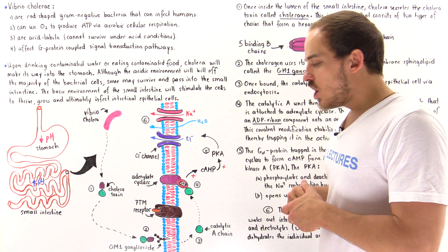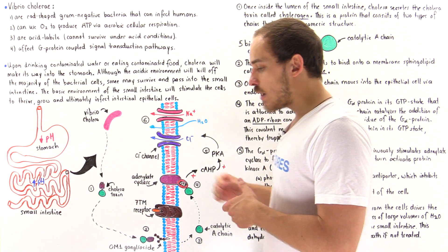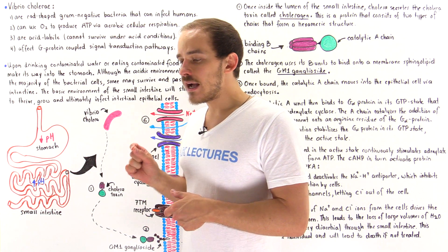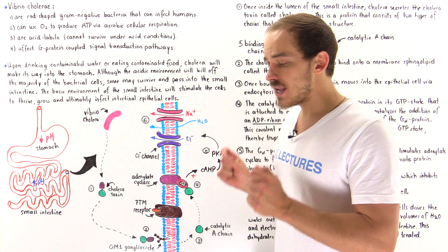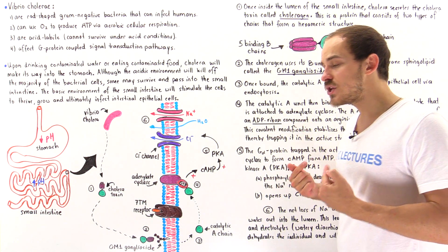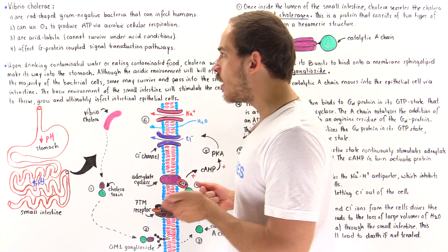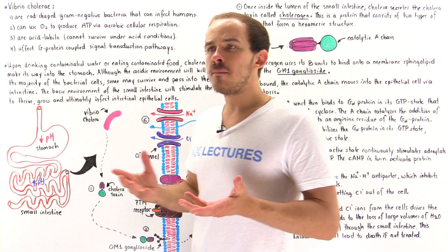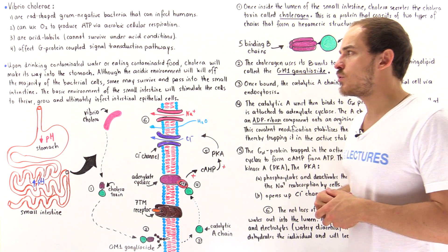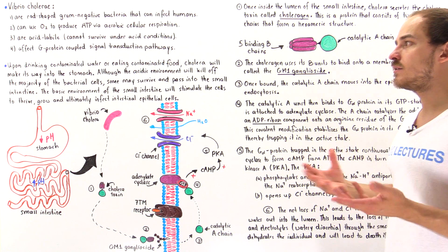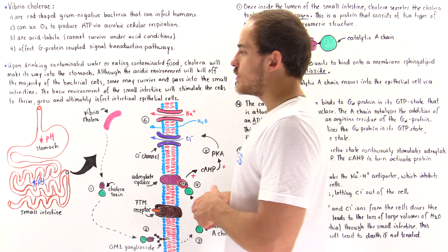What I'd like to focus on in this lecture is how a specific type of bacterial pathogenic agent that infects our cells can actually cause the malfunction of G-protein-coupled signal transduction pathways, and that can lead to many problems, as we'll see in just a moment.